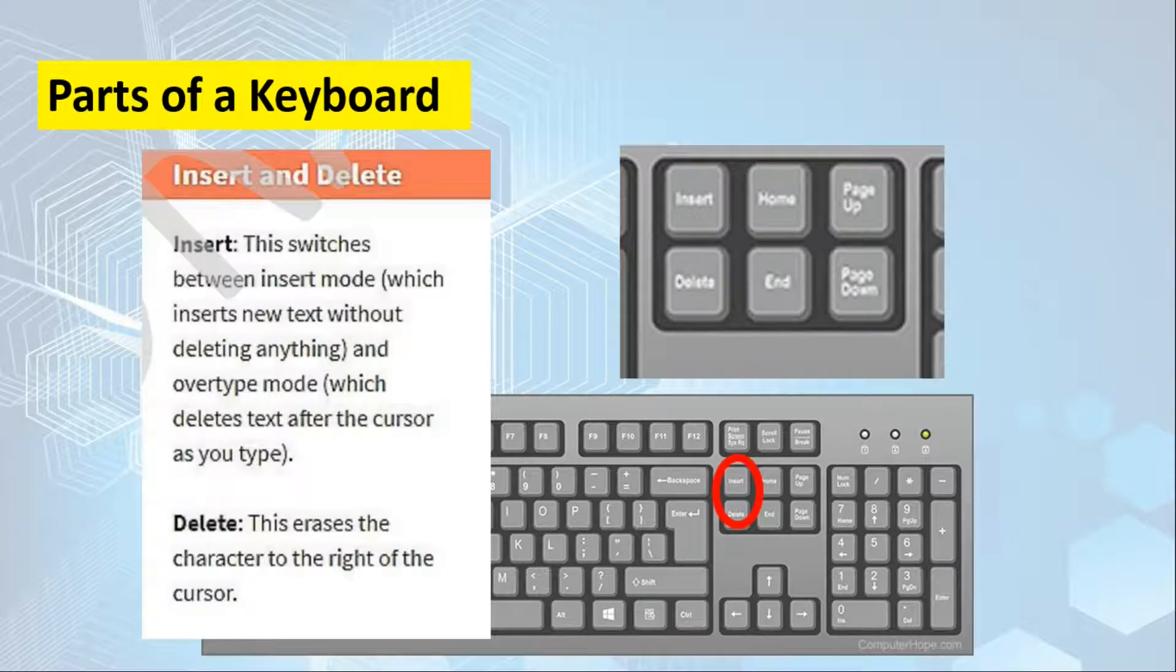We also have insert and delete. For insert, it switches between insert mode, which inserts new text without deleting anything, and overtype mode, which deletes text after the cursor as you type. For delete, this erases the characters to the right of the cursor. While backspace deletes to the left of the cursor, delete removes text to the right.